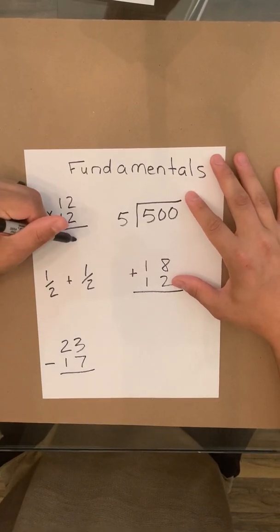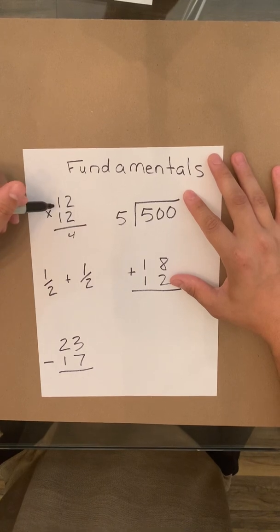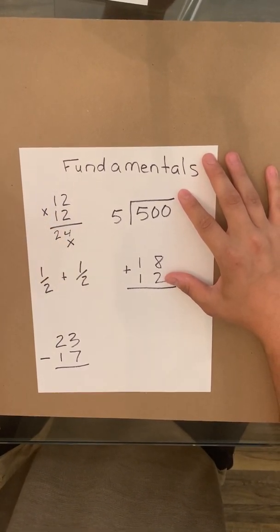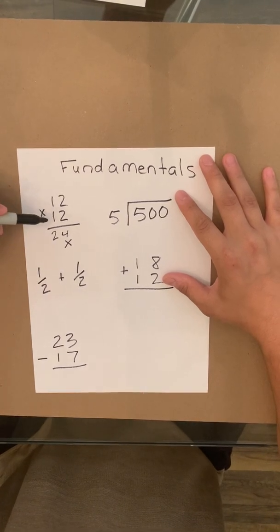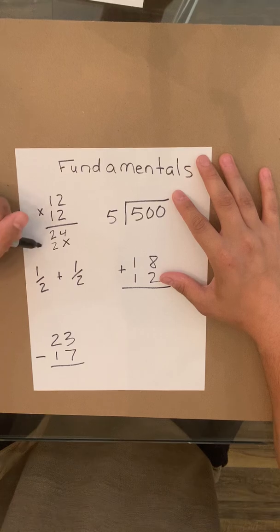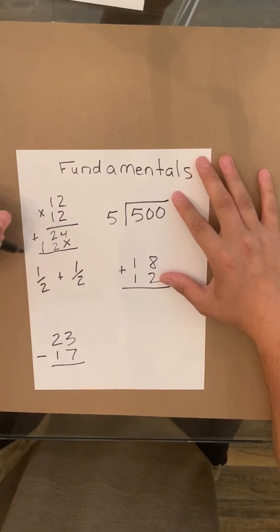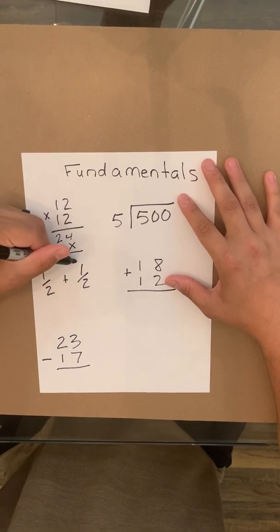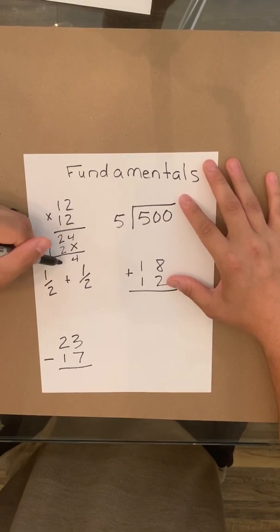It's going to be 2 times 2 is 4, 2 times 1 is 2. Then you'll put an X right here that represents 0. And it's going to be 1 times 2 could be 2, 1 times 1 that's 1. Once you finish this, you're going to go ahead and add these up.